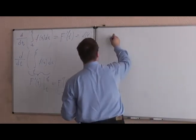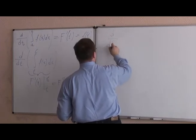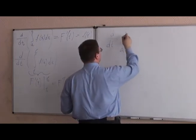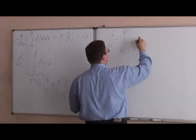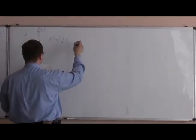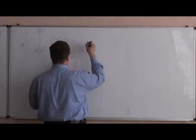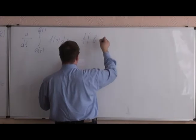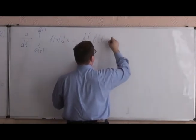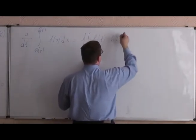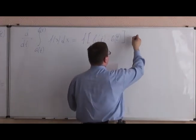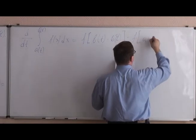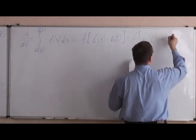In general case, if we differentiate the integral from a as a function of t to b as a function of t of some function f of x dx, this is going to be something like f of b times b prime of t minus f of a times a prime of t.